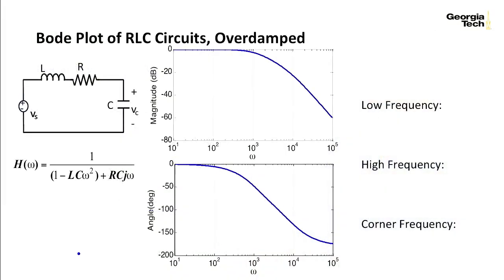In the last module, we derived the transfer function of an RLC circuit, where this is the input here, this source, and then this is the output of the circuit, which is the voltage across the capacitor. And this is the transfer function.